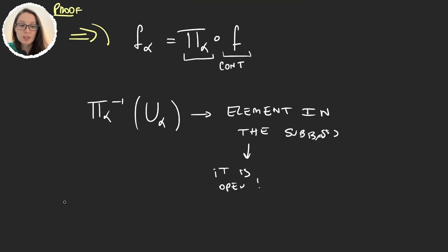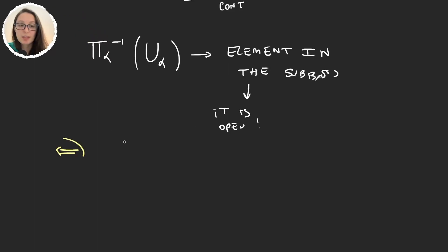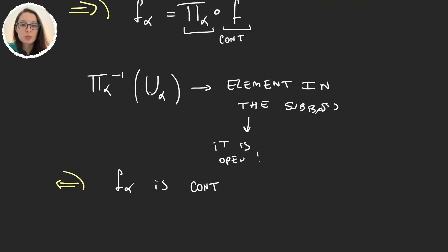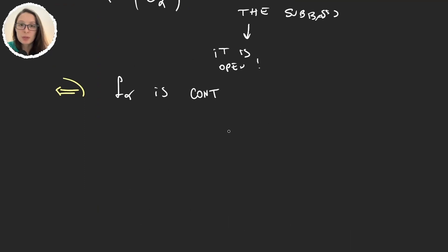Now let's see the other direction. We have that f_α is continuous, and we want to prove that our function is also continuous. To prove that this function f is continuous, we should take an open set in the product topology, and prove that the preimage through f is also open. So to do this, it's enough to show it for an open set in the basis, or in the subbasis.